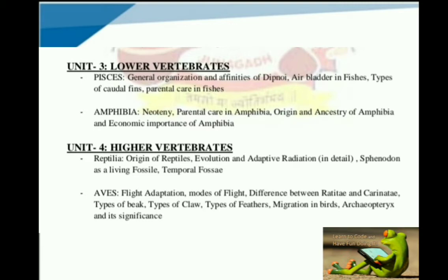Then we are going to discuss unit number 4. This unit's name is Higher Vertebrates. This unit has 3 classes: class Reptiles, class Aves, and class Mammals. For class Reptiles, we study origin of reptiles, evolution and adaptive radiation, Sphenodon as a living fossil, and temporal fossils.